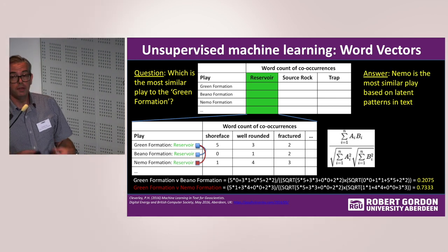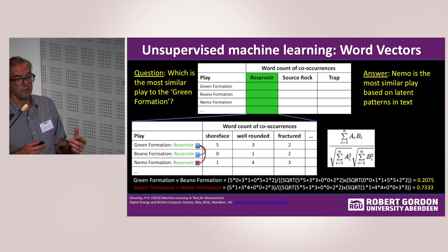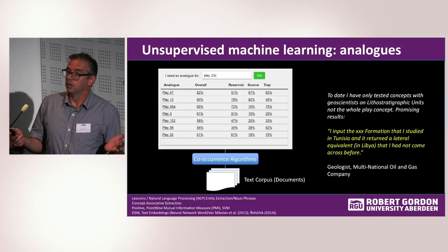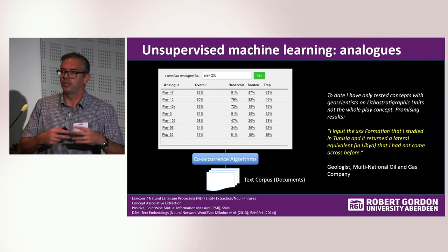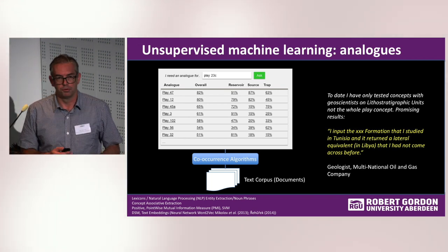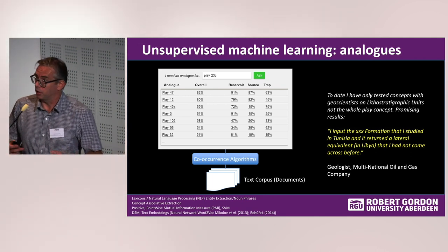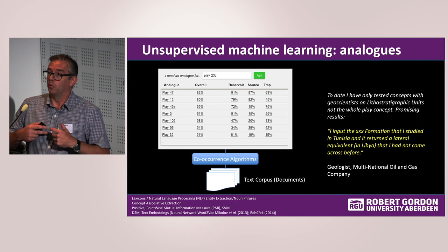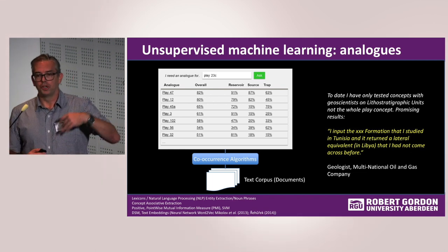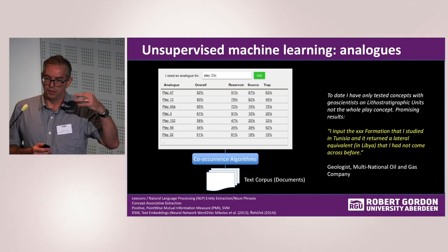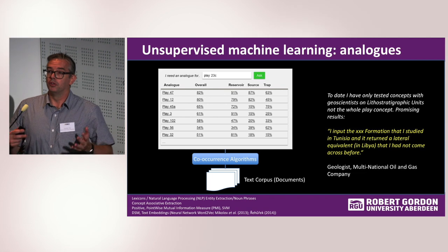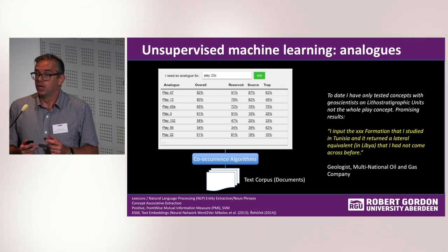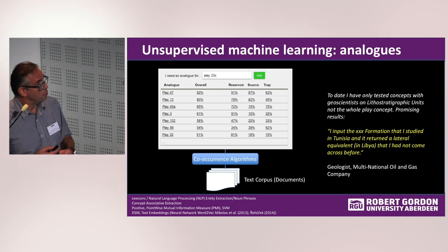Taking this further, we can develop a search-based application that returns entities rather than documents — the concept of 'things, not strings,' which has been around for many years. Using cosine similarity as a suggestion for an analogue: in areas of sparse data, when you're looking for something similar — say a volcanic sandstone that's been fractured — it'll just come back with the best answer it can. This is quite useful for analogues, because in a normal keyword search you don't know what you're looking for, so you can't actually search for it.